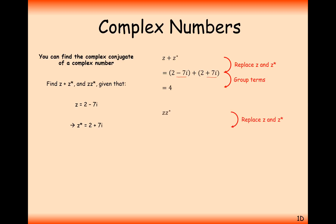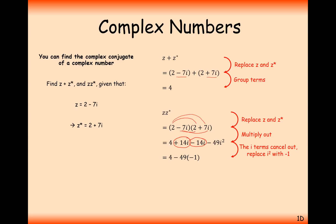For ZZ star, we're going to multiply our two complex numbers: 2 minus 7i times 2 plus 7i. Expanding the brackets, we get 4 minus 14i plus 14i minus 49i squared. The imaginary parts are always going to be one positive, one negative when multiplying a complex number by its complex conjugate, so they cancel out. Replacing i squared with minus 1, we get 4 plus 49, which gives us 53. Effectively, you square the real part, square the imaginary part, and add them together.